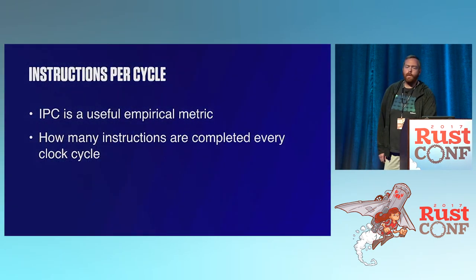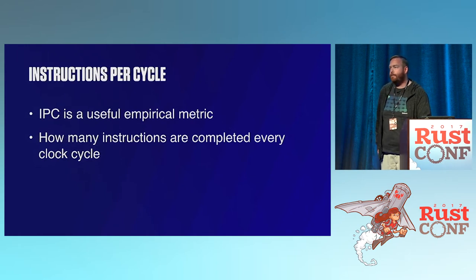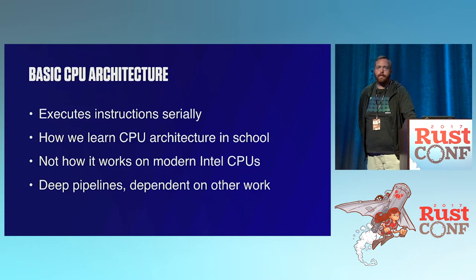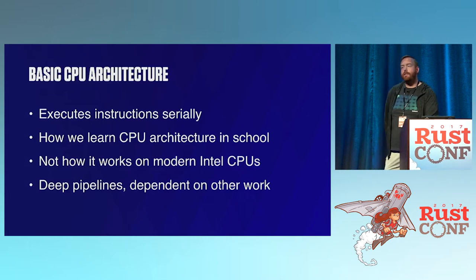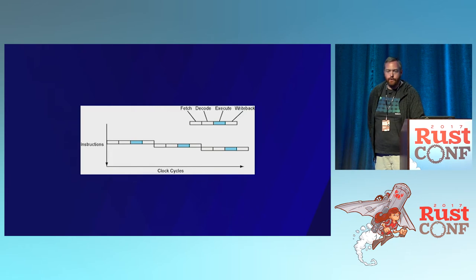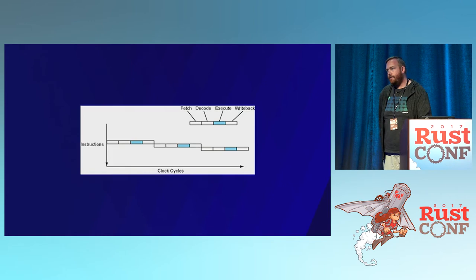IPC is a fairly commonly known metric we use as a useful empirical measure. It tells you how many instructions are completed every clock cycle. When we learn CPU architecture in school, we tend to learn it as a program that runs one instruction, then the next, then the third. That's just not how it works on modern Intel CPUs — that's the serial model, which you can see broken up into pipeline stages.